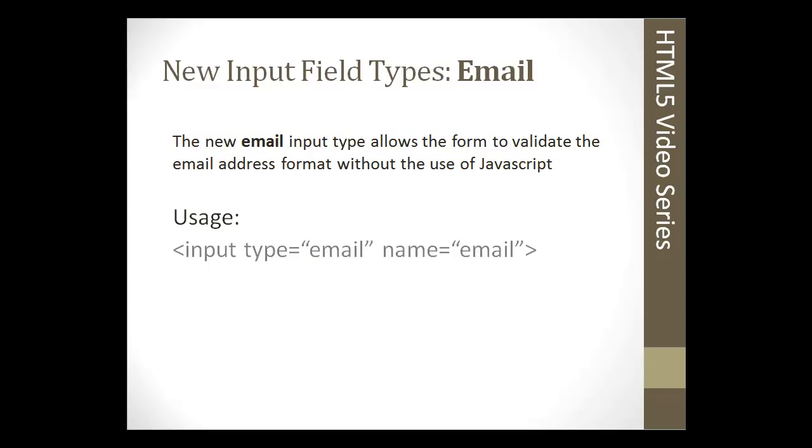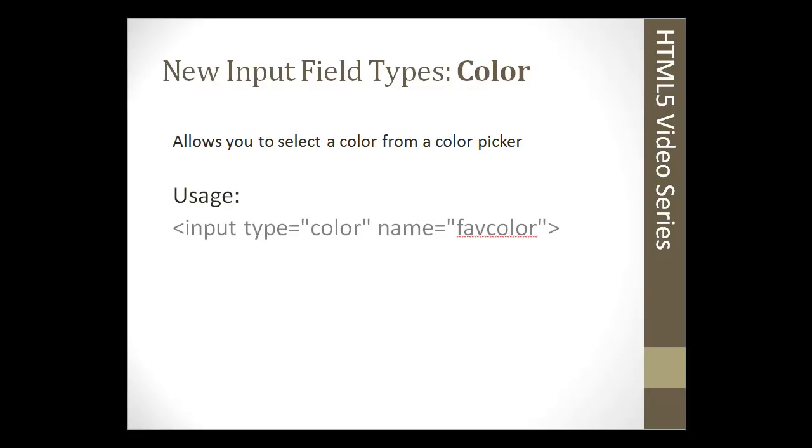The next one we have is color. That's another one that if you wanted to use before, you'd have to use some pretty heavy JavaScript. This is as simple as using the word color in the type attribute of the input field, and you'll get a little box where you can choose the color.